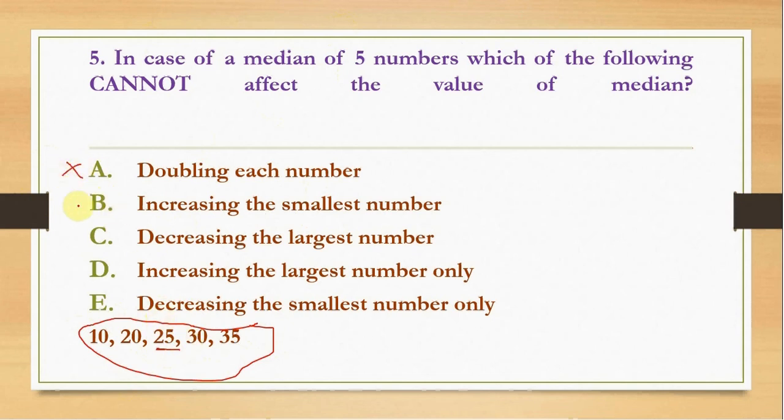In this case 25 will be doubled to 50 and the value of median will be affected. This is not our correct answer. Option B is a little bit confusing. If we increase the smallest number, for example 10 to 11, the value of median will not be affected. Whereas if we increase 10 to 100, the value of median would shift to 30. So this can affect the value of median.